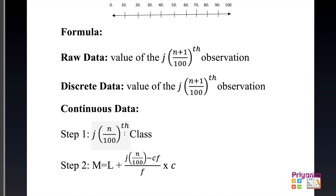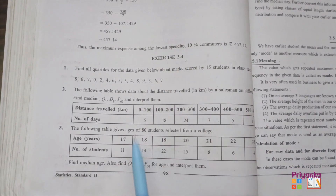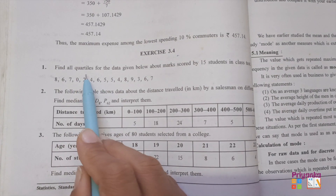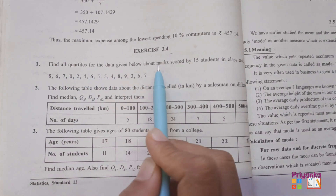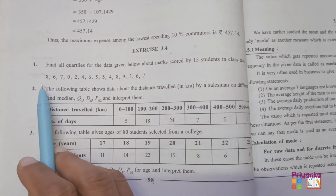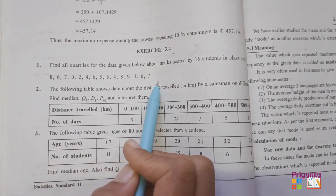This video continues with Exercise 3.4, where all formulas are applied directly in the solution. Exercise 3.4 starts on page 98. The first question asks to find all quartiles for marks scored by 15 students in a class test.